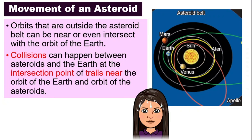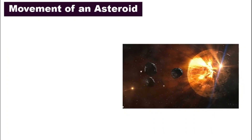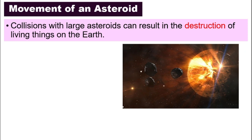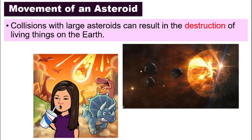Can the collision cause any danger to us? Absolutely. Collisions with large asteroids can result in the destruction of living things on Earth. In fact, some scientists come up with the theory that our dinosaurs went extinct because of a collision between the Earth and an asteroid long, long time ago.